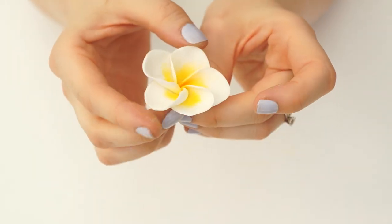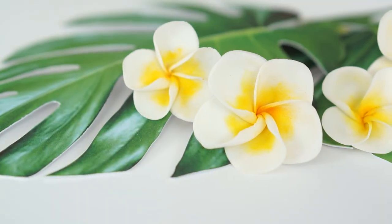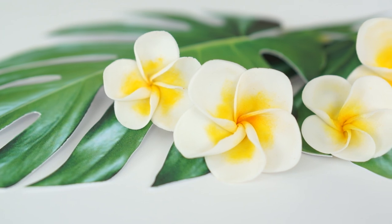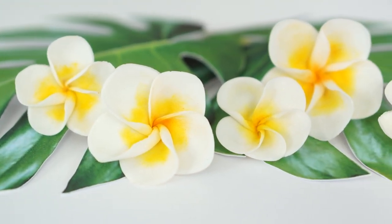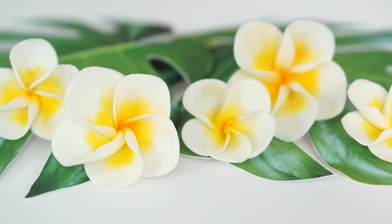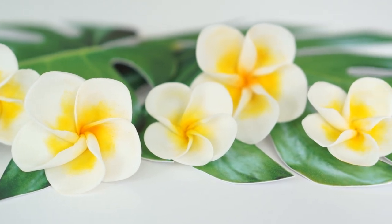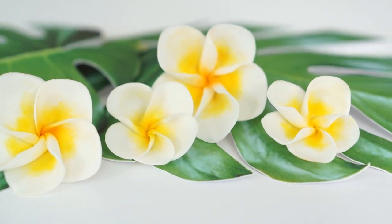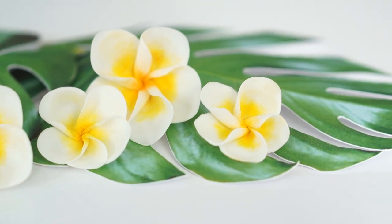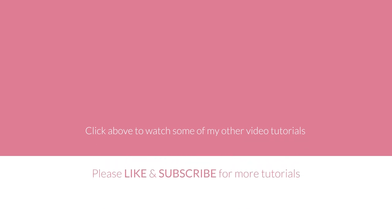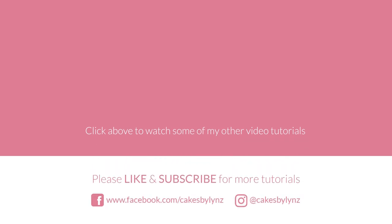And there you have your tropical flower. These flowers come in all different color combinations - you've got the white and yellow, variations of pinks and purples. There's so many different colors and sizes that you can make that would look great on your cupcakes and birthday cakes. I really hope you enjoyed this video tutorial. If you did, please give it a like, and if you'd like to see more of my video tutorials, please subscribe.